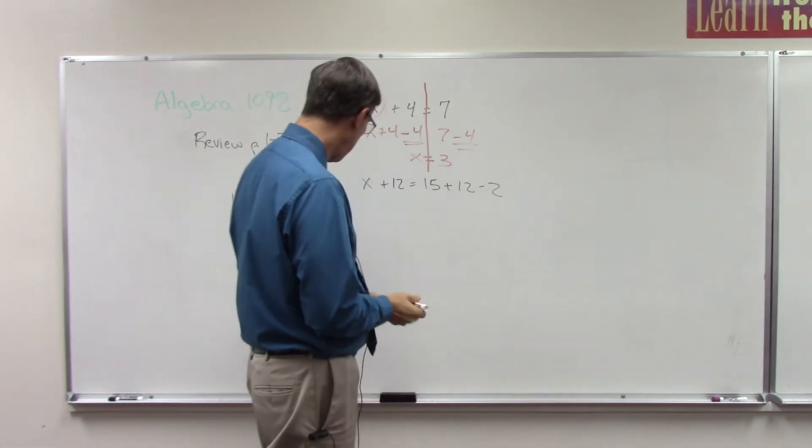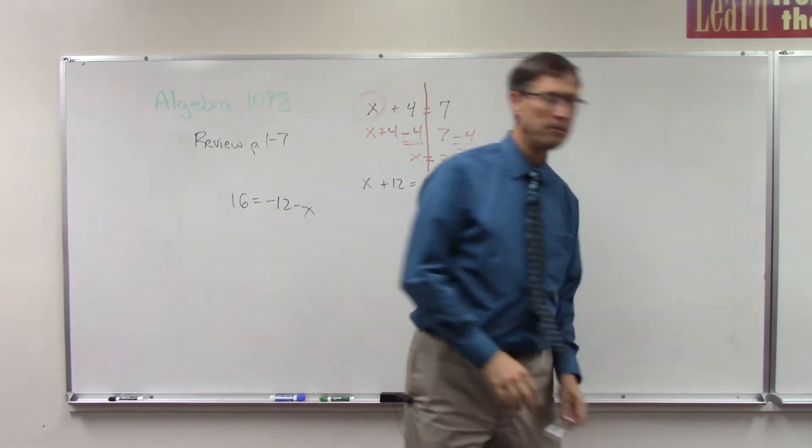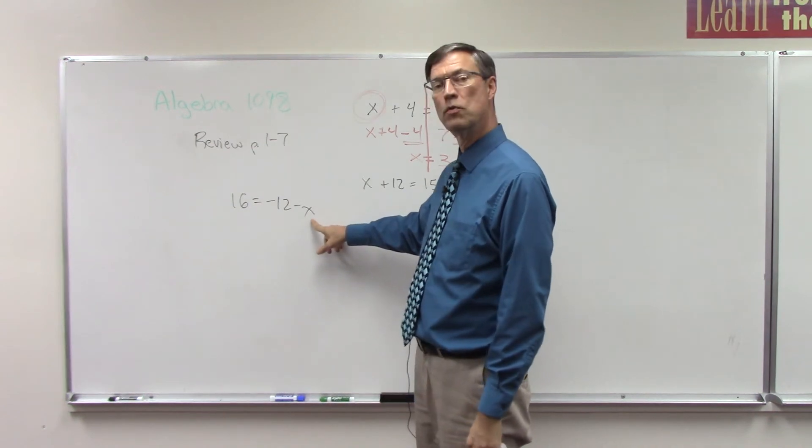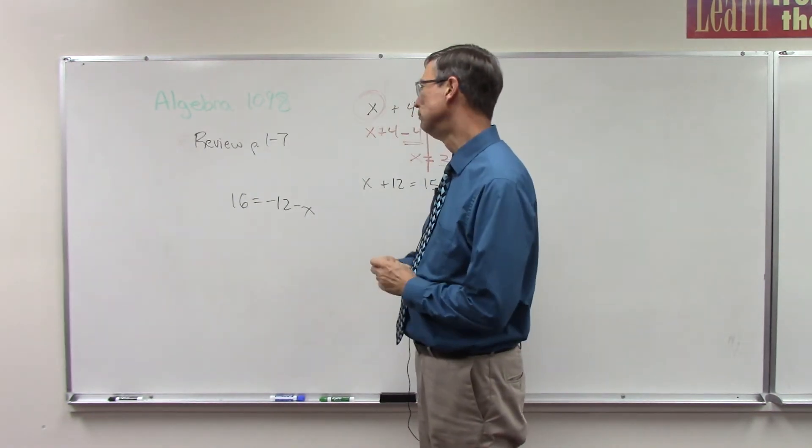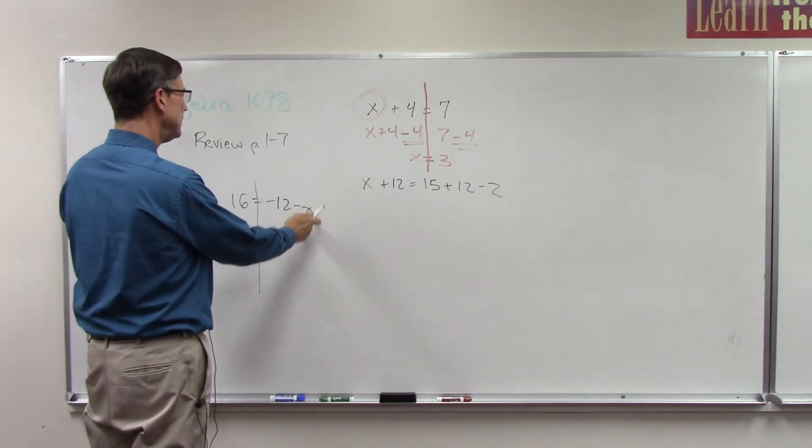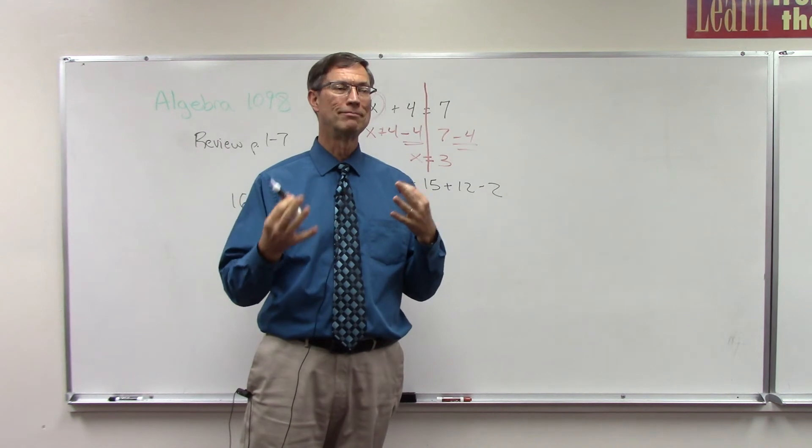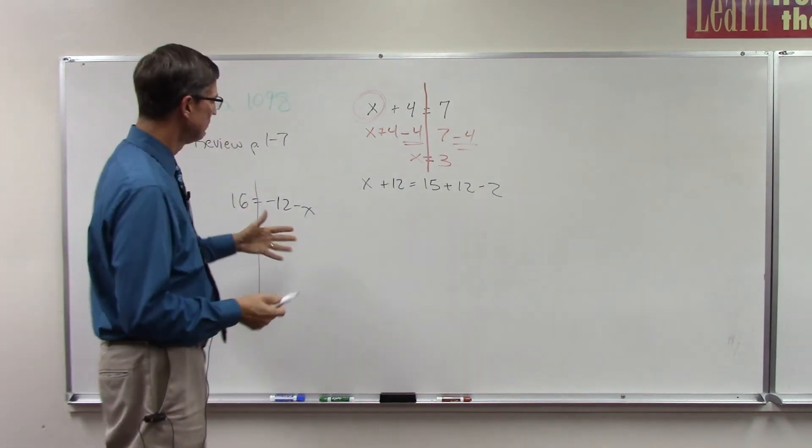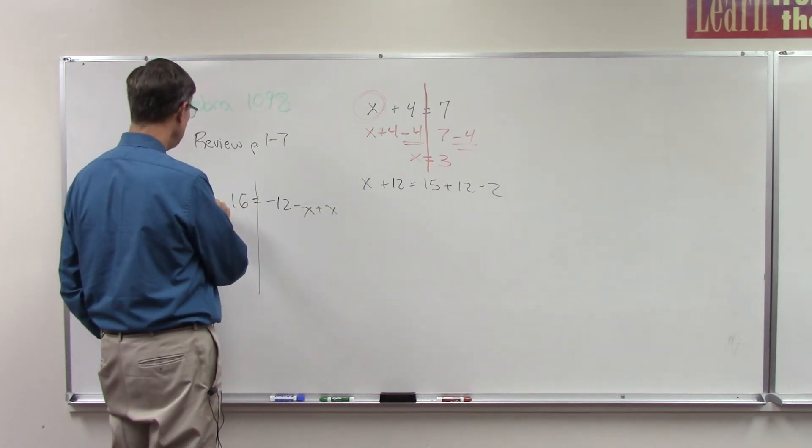Now this one is kind of weird because they have the x over here on the right-hand side and we have a negative 12 in here. One of the first things again is to draw a line through the equals. I want to get the x on the left—it makes the problem a little more familiar and a little easier if we keep the variable on the same side all the time. So it's a little awkward at first to have the x over here. I'm going to add x to both sides, so plus x.